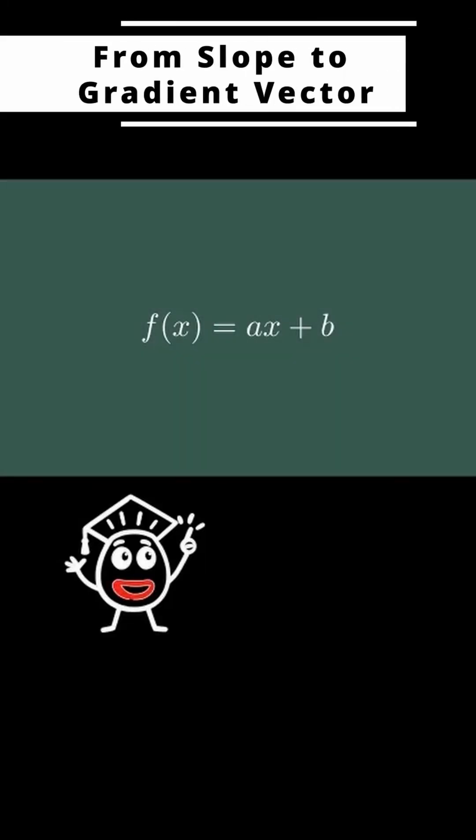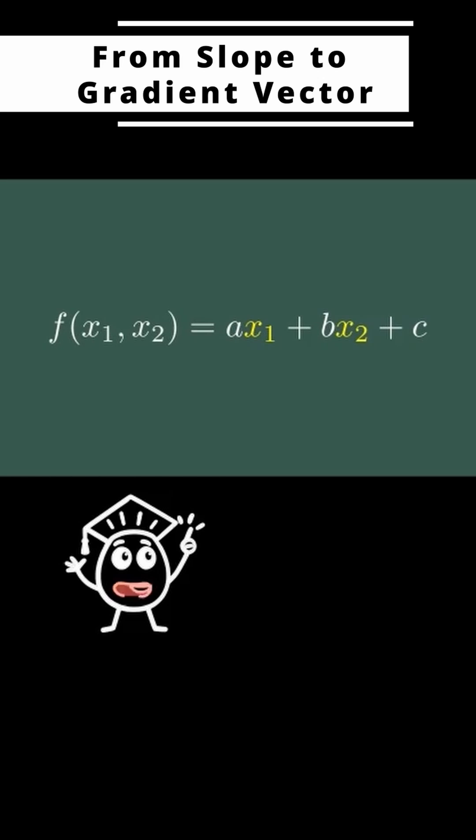But in the real world, especially in machine learning, functions usually depend on many variables. So let's bump it up. f of x1, x2.